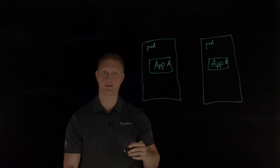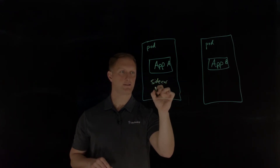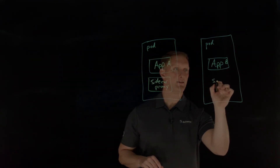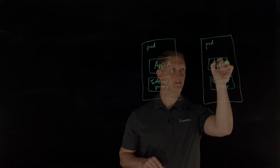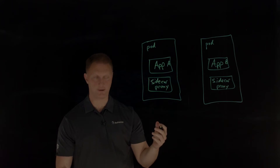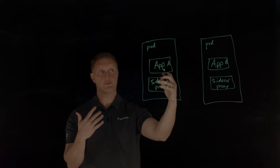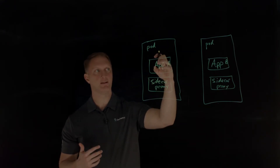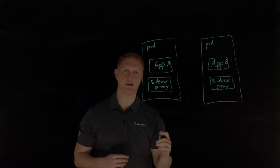That's where you have a sidecar proxy — not put the logic right into the application itself. The sidecar proxy sits alongside this containerized application within the pod in Kubernetes. Just like any other proxy that sits in front of something and acts on behalf of that thing, that's exactly what a sidecar proxy does for the service or application within the pod.